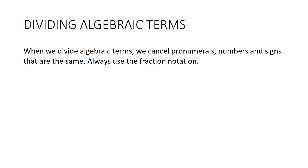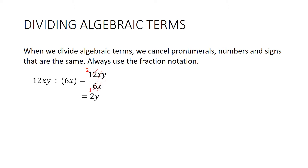When we divide algebraic terms we cancel pronumerals, numbers and signs that are the same, and we're always careful to use the fraction notation rather than the divide-by sign. For example, 12xy divided by 6x — we write it as a fraction. The x's cancel, and 6 and 12 have a common factor of 6. So 6 into 12 goes twice, 6 into 6 goes once. On top we have 2y, on the bottom we have 1, so our answer is 2y.